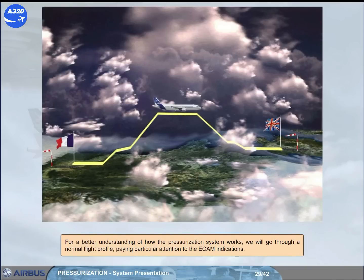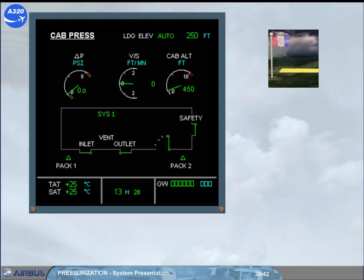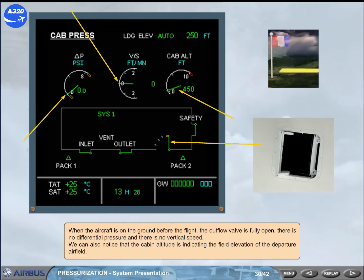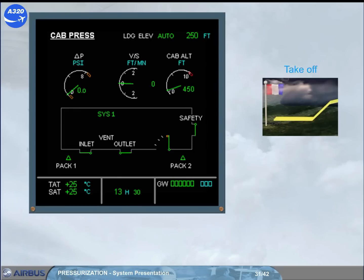For a better understanding of how the pressurization system works, we will go through a normal flight profile, paying particular attention to the ECAM indications. When the aircraft is on the ground before the flight, the outflow valve is fully open. There is no differential pressure and no vertical speed. The cabin altitude indicates the field elevation of the departure airfield. During the takeoff roll, the system controller signals the outflow valve to close slightly in order to pre-pressurize the aircraft, to avoid a pressure surge at rotation.